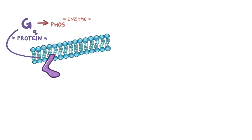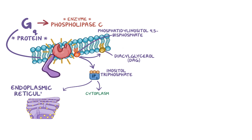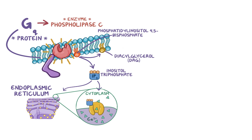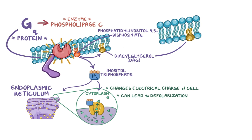The GQ protein activates the enzyme phospholipase C, which is found in the cell membrane. Phospholipase C then cleaves a phospholipid called phosphatidylinositol-4,5-bisphosphate into inositol-trisphosphate and diacylglycerol. Inositol-trisphosphate is soluble and diffuses freely through the cytoplasm into the endoplasmic reticulum, where it opens calcium channels; since calcium concentration is higher in the endoplasmic reticulum, calcium flows out into the cytoplasm, changing the cell's electrical charge and potentially causing depolarization. Meanwhile, diacylglycerol remains attached to the cell membrane and binds to protein kinase C, which also relies on calcium to fully activate, then phosphorylates target proteins.